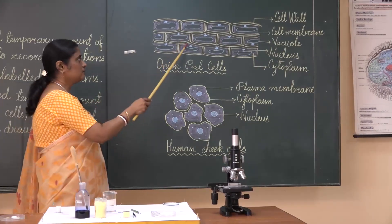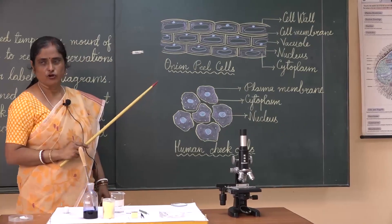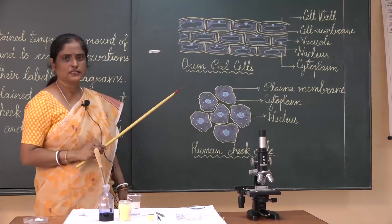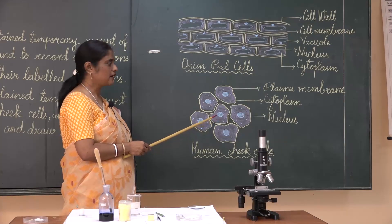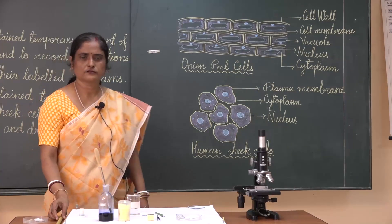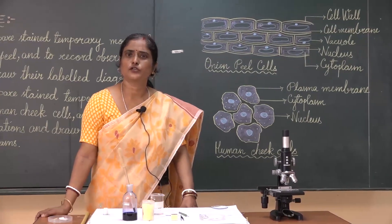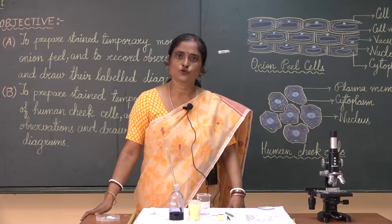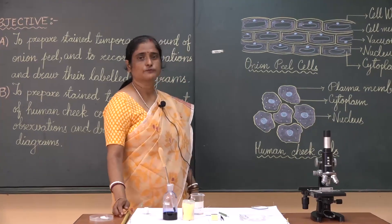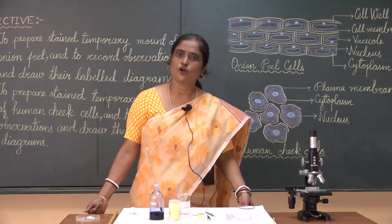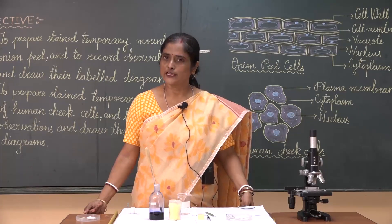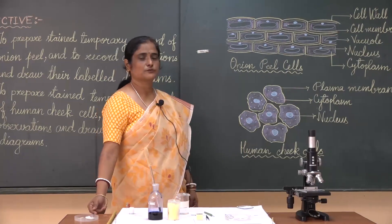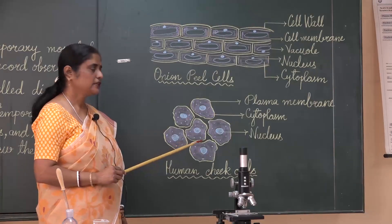Can you find any other difference? Yes — vacuole is found in plant cells but is absent in animal cells. There are further differences that we cannot find under low power. Under high power, we can observe a cell organelle called chloroplast or plastids, which is present in plant cells but absent in animal cells. Also, the Golgi apparatus found in animal cells is found as dictyosomes in plant cells. There is an organelle called centrosome, which is found in animal cells but absent in plant cells. That is all for today. Thank you, children.